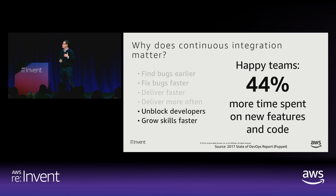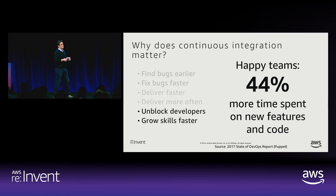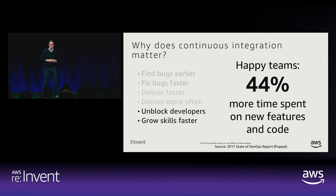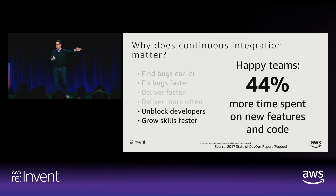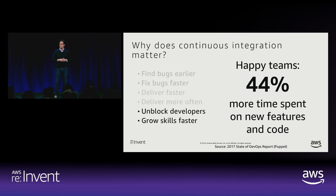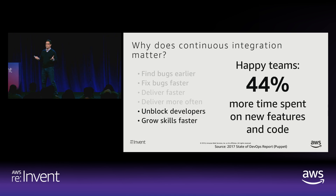Happy developers are the lifeblood of any company cranking out software. You want to keep them sharp, maintain them, keep them happy. That feedback loop not only improves quality, but it does keep the development teams happier. Teams operating CI/CD — no matter how you look at it — this is really a win-win. It's a win for the developers who are writing the code and a win for the management teams and your enterprise.